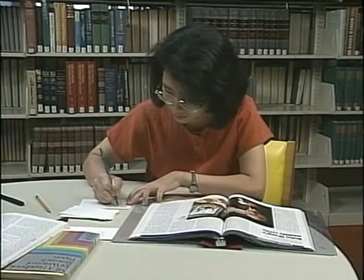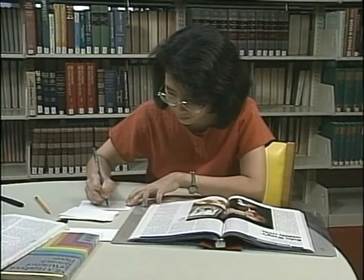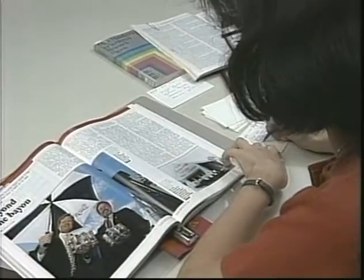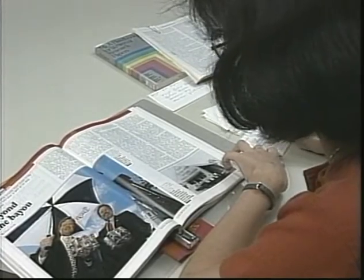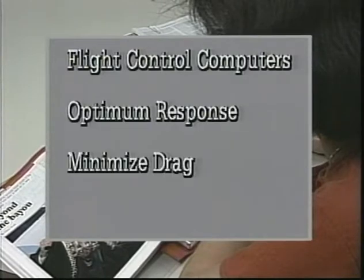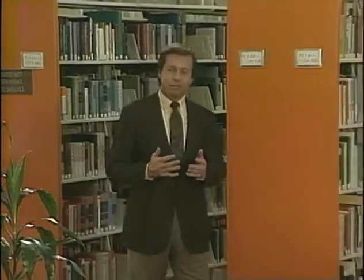Finally, the last type of note-taking is called key term notes — that is, you write down only key phrases and words which give you a shorthand version of the information. For example: flight control computers, optimum response, minimize drag, maximize performance. Now you have four methods of taking notes: direct quotes, paraphrase, summarizing, and key terms.